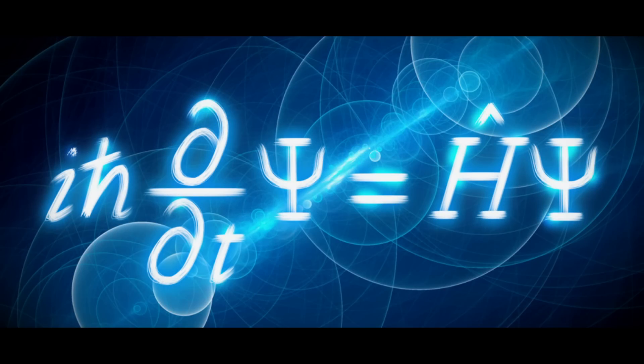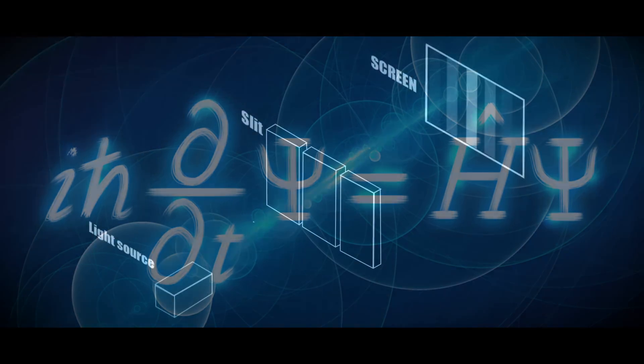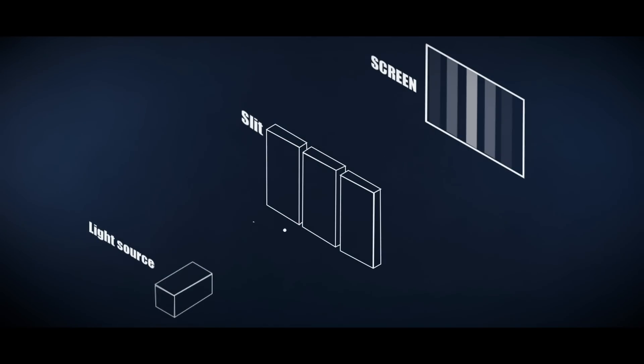Since each photon has its own distinct wave function, they can and do interfere with each other. This interference causes the striped pattern we observe when the photons reach the back screen.